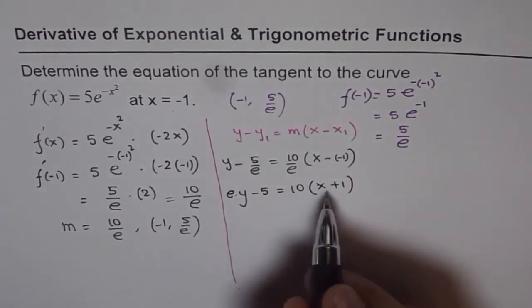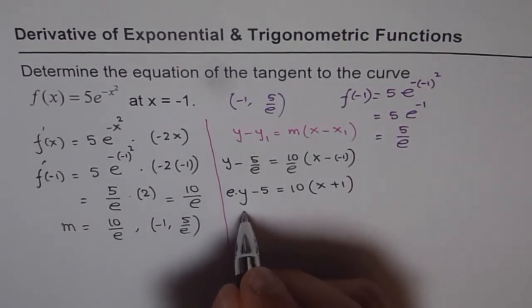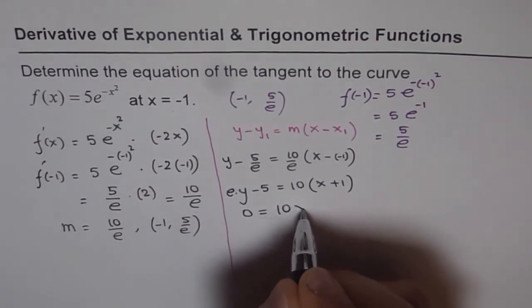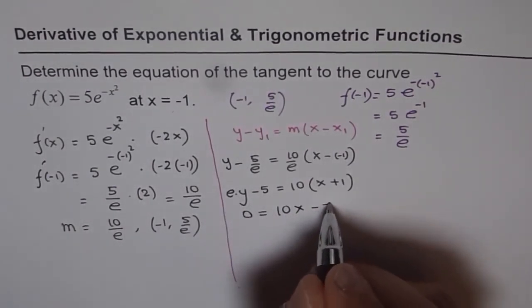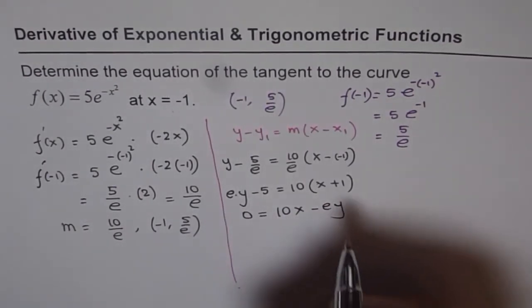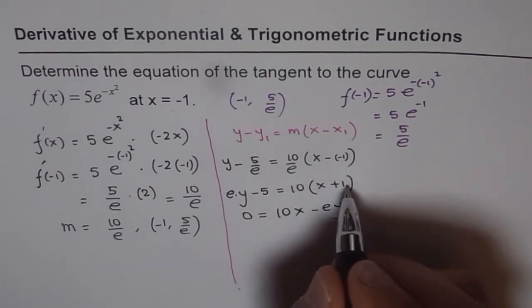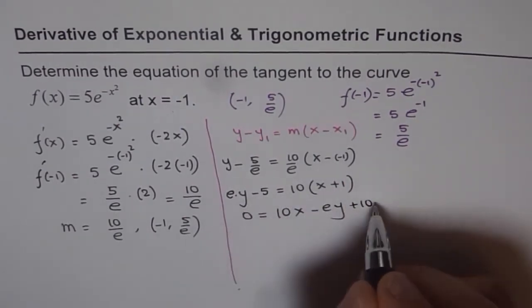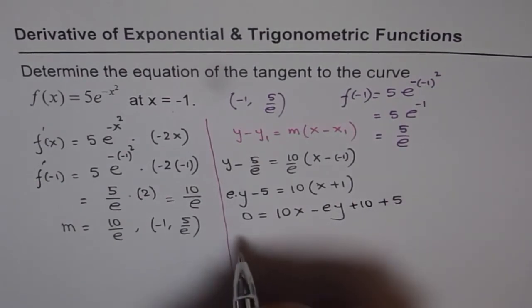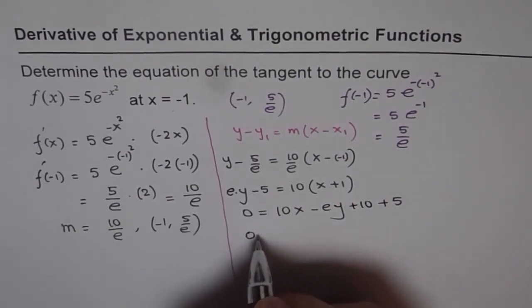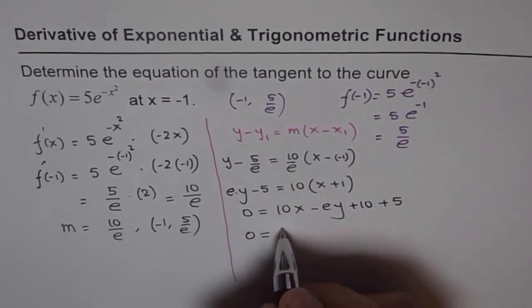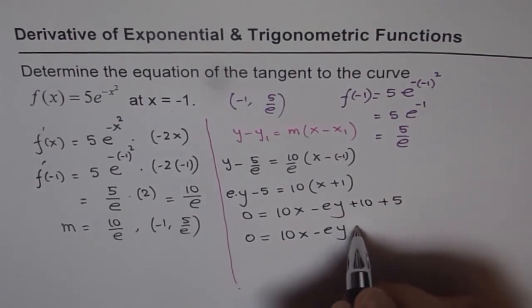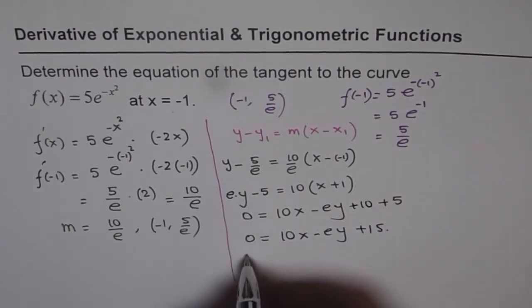Now we can bring all the terms to the right side, so we get 0 = 10x - ey + 10 + 5, which simplifies. So the equation of the tangent line is 10x - ey + 15 = 0.